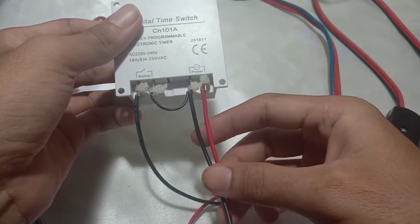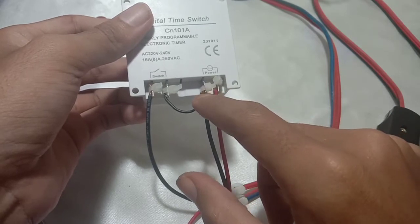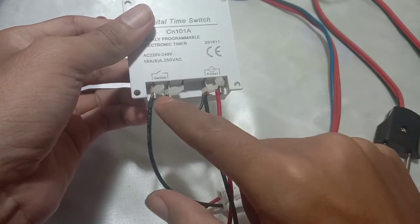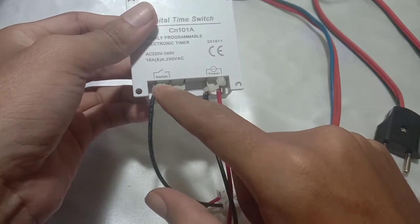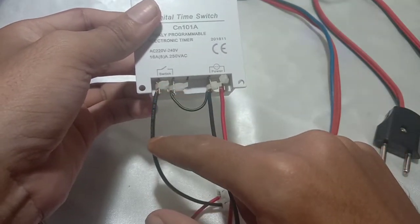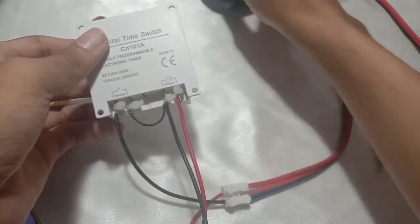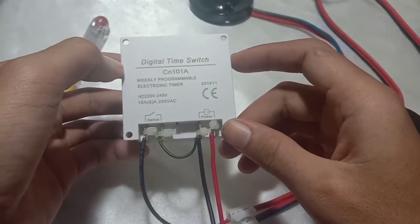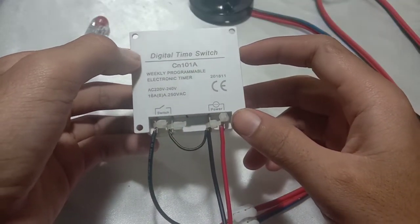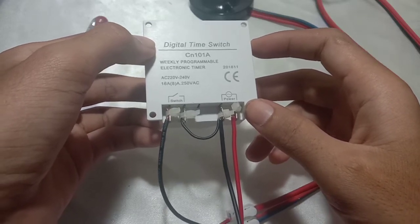I put red and black wire here and pull one black wire to the output over here. You can see it. And then this one, the left corner, it is the output so I connect it to the lamp over here. This is how to wire this digital timer.